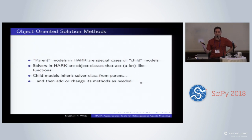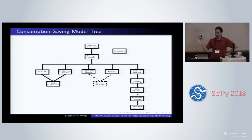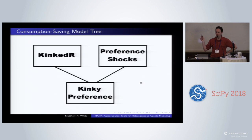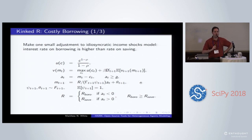Each model not only specifies a subclass of AgentType but also a subclass of the solver for the AgentType above it in the model tree. Suppose you wanted to add one little twist: you can borrow now. We don't have a hard borrowing constraint at zero, but the interest rate on borrowing is greater than the interest rate on saving — like you're borrowing on a credit card and saving in a zero-percent savings account.